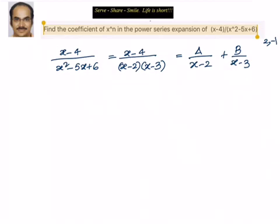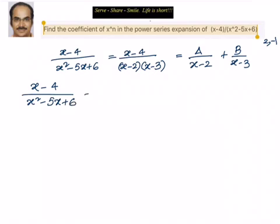Once we found the values of A and B, the given expression x minus 4 divided by x squared minus 5x plus 6 is equal to 2 divided by x minus 2 plus minus 1 divided by x minus 3.